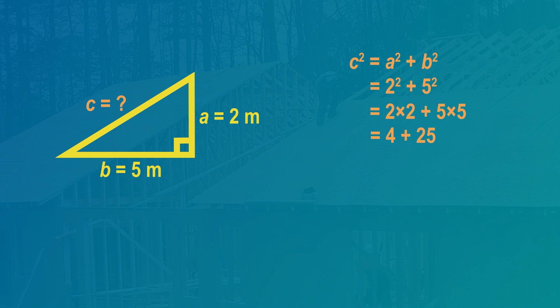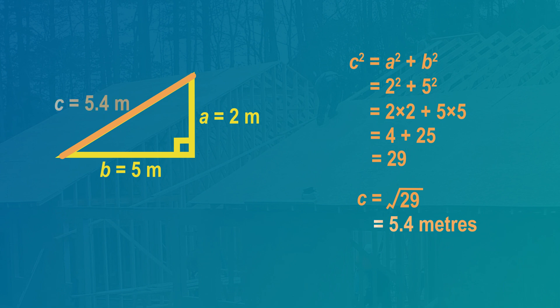To add them, 4 plus 25 is 29. So C squared equals 29. But we want to find the length of C, not C squared, so there's one more step. C is the square root of 29, which is 5.4. The length of the slope of this roof is 5.4 meters long.